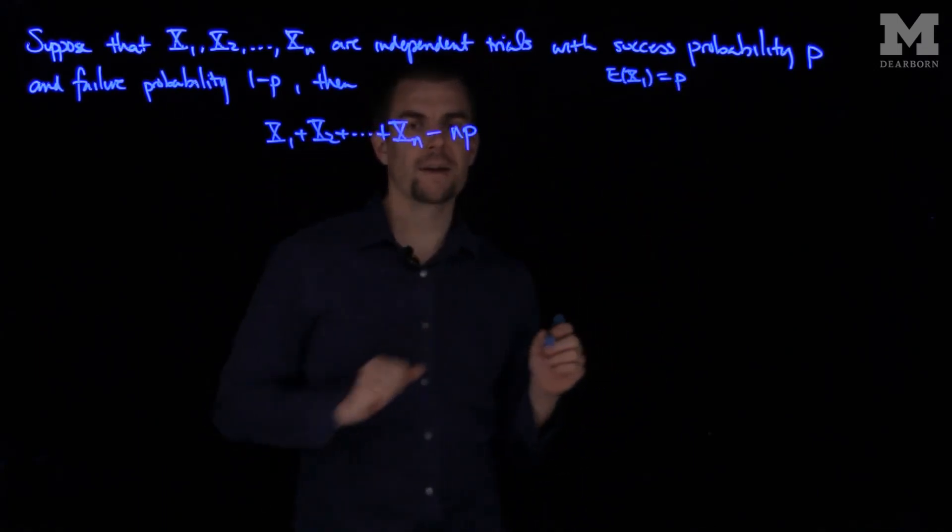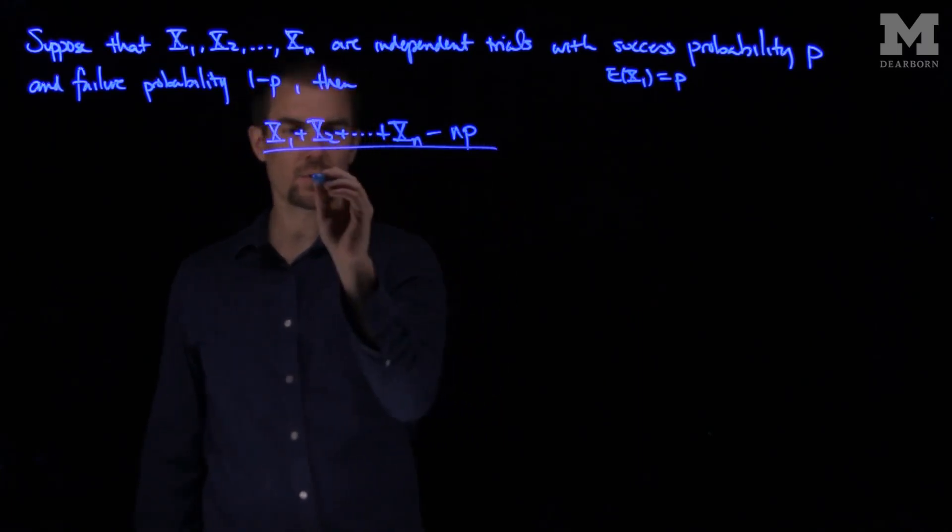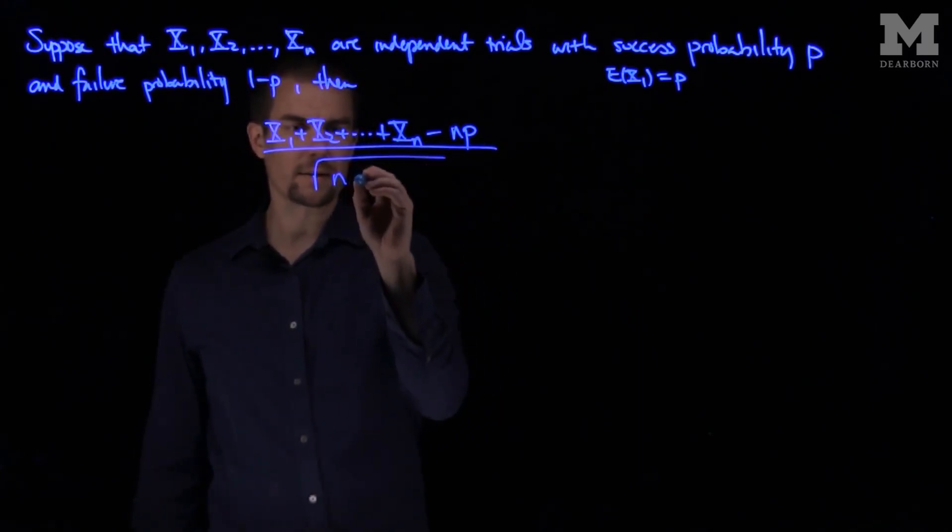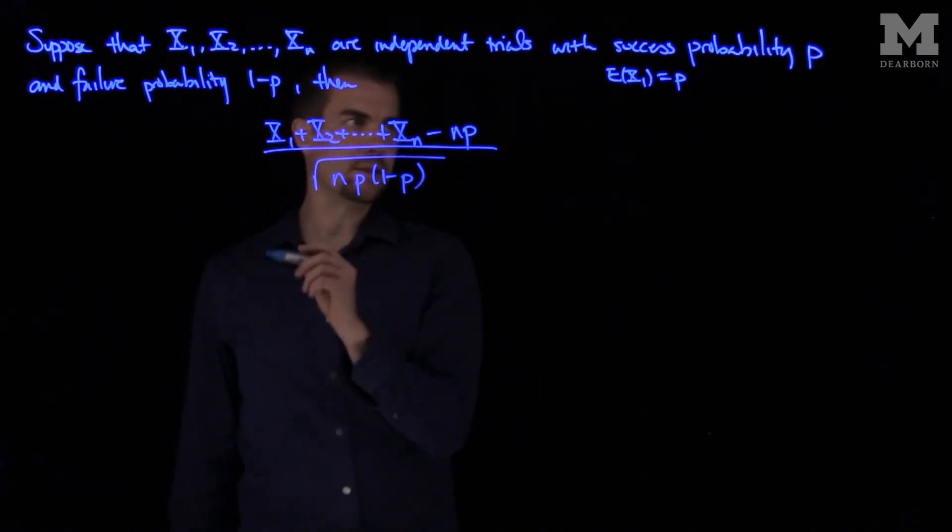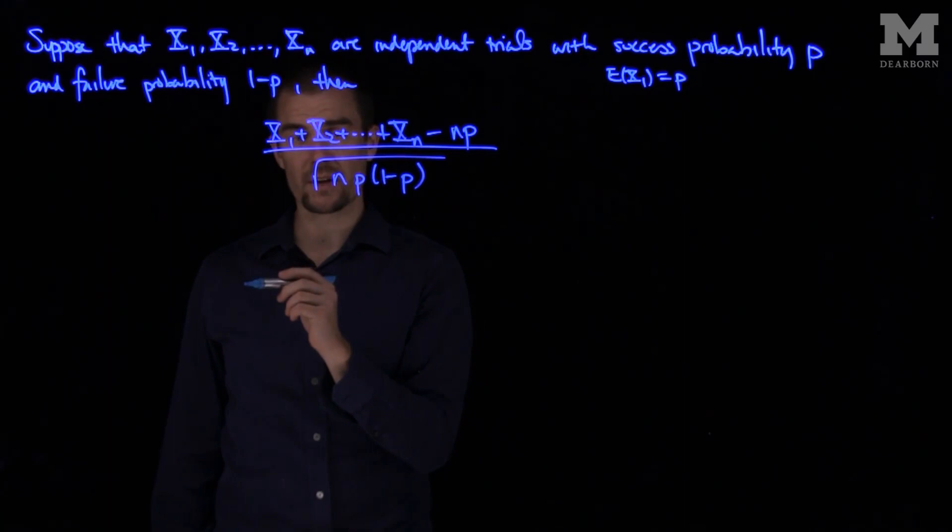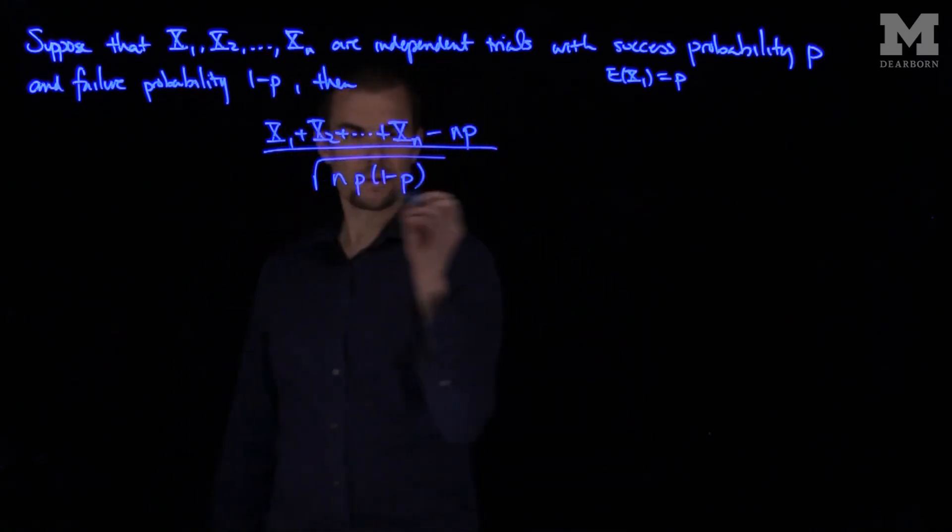So this will be n times the expected value, and then I divide by the square root of n times p times 1 minus p. That p times 1 minus p is the variance of one of these random variables, and so this is the normalized standard deviation.